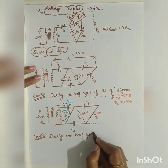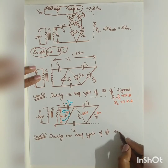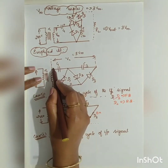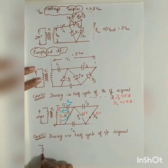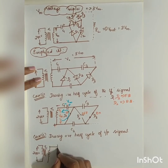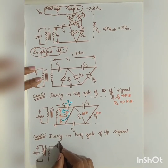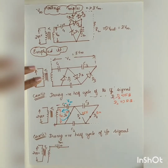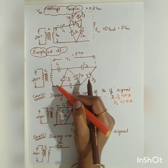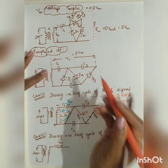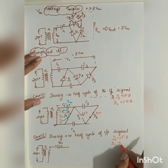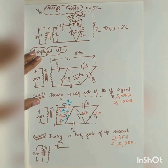Case 2 is during the positive half cycle of the input signal. Here the top terminal becomes positive and the bottom becomes negative. Capacitor C1 has already charged to Vm. During the positive half cycle, diode D2 is forward biased while D1 and D3 are reverse biased.